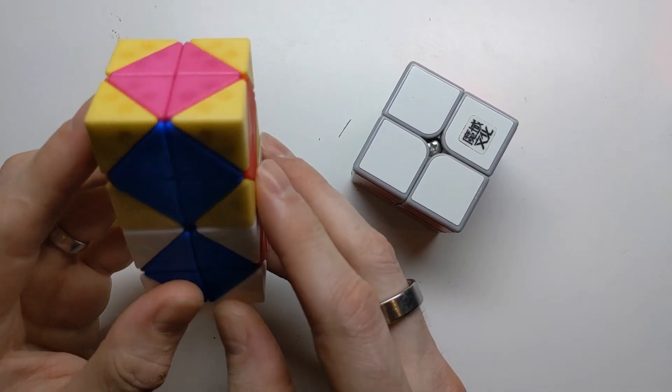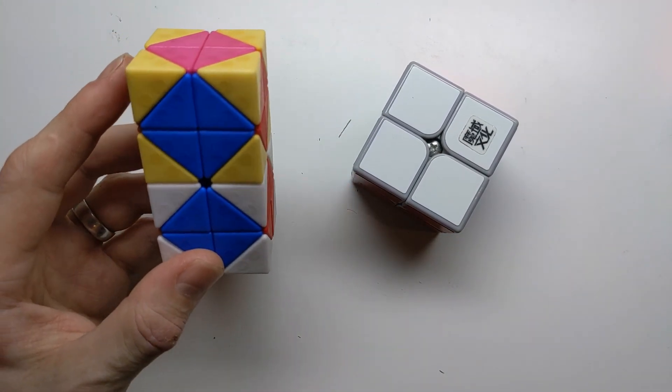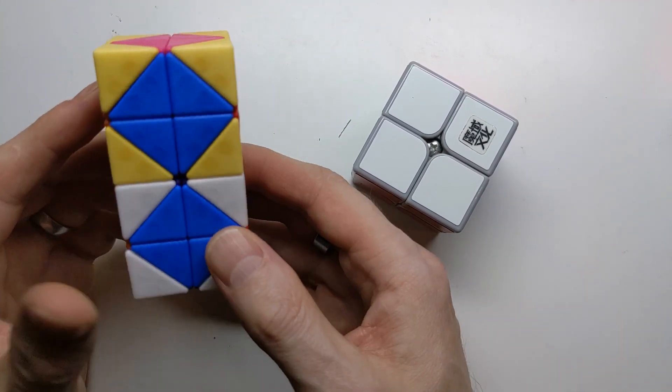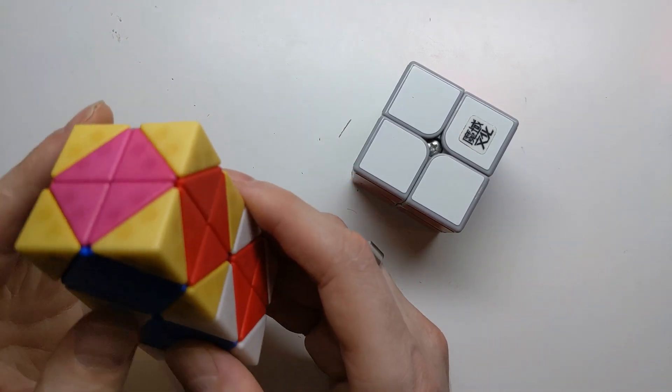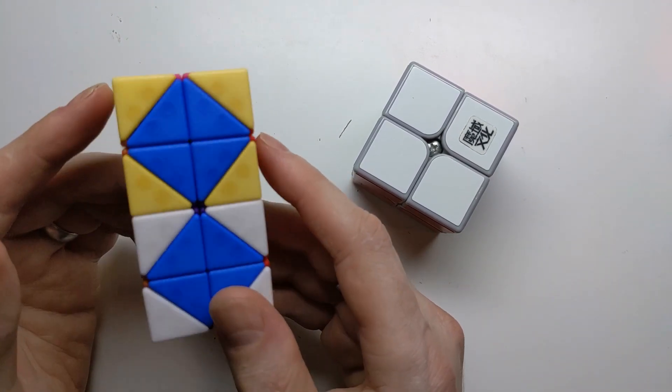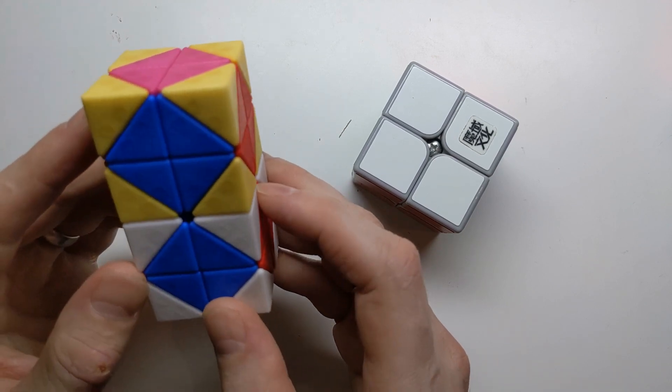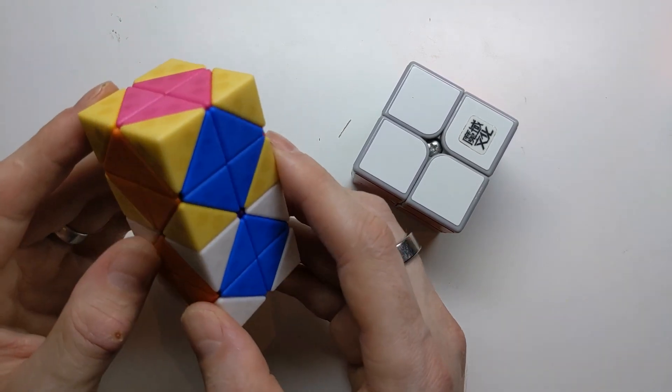But the genius of what Melinda Green, who invented this puzzle, has done is that she's arranged a set of three-dimensional pieces such that if you move them in the right ways, relative to each other, you have a puzzle that scrambles and solves just like the four-dimensional equivalent would do.